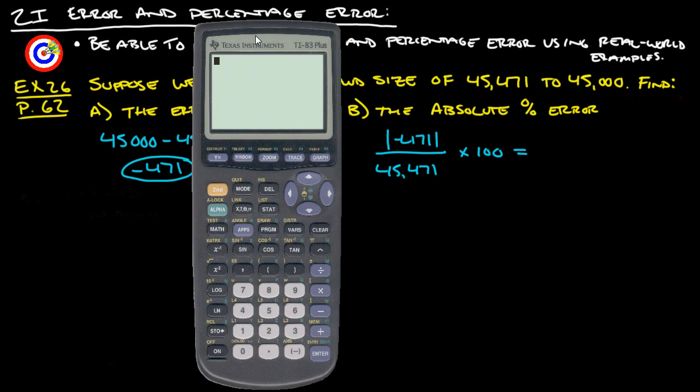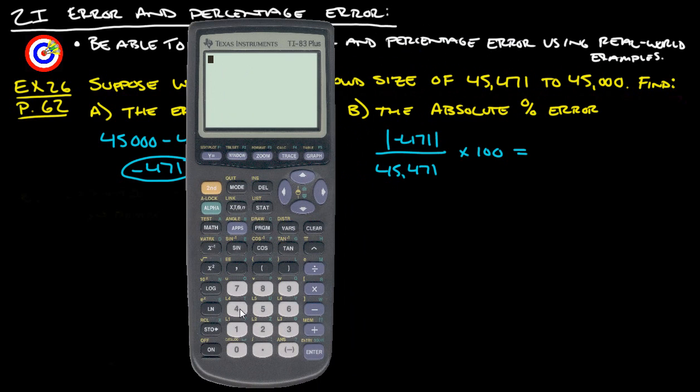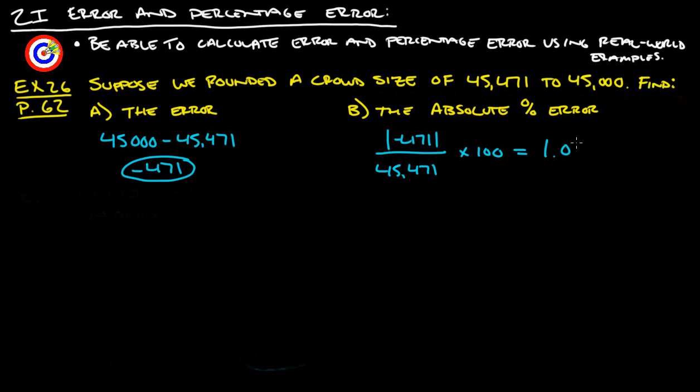Let's check that out and see what we get. We take 471, because that's the absolute value of negative 471, divided by 45,471, and then basically just move the decimal over two spots or multiply it by 100. So we get 1.0358, let's round that to 1.036% error.